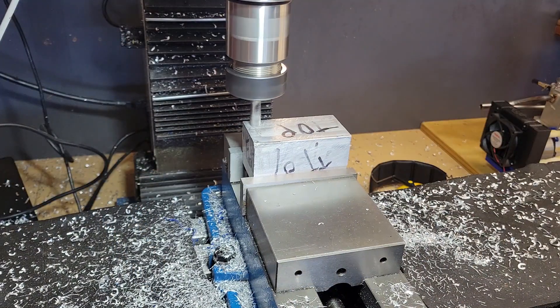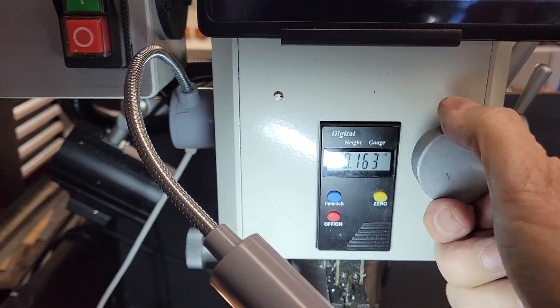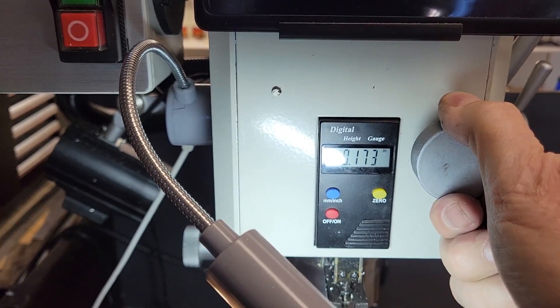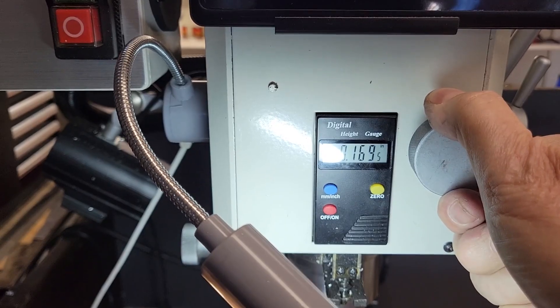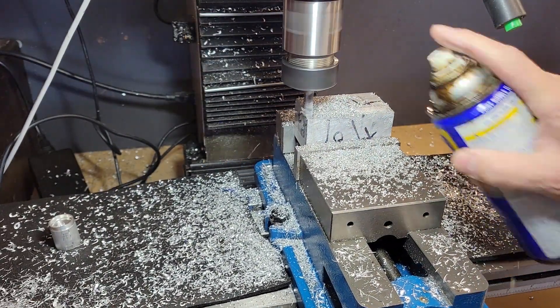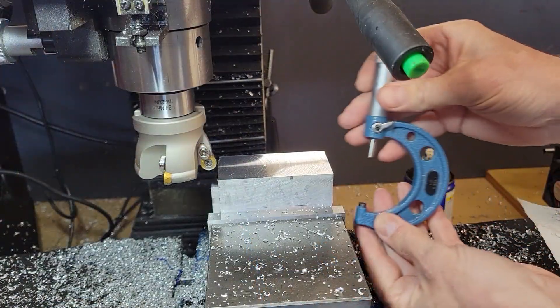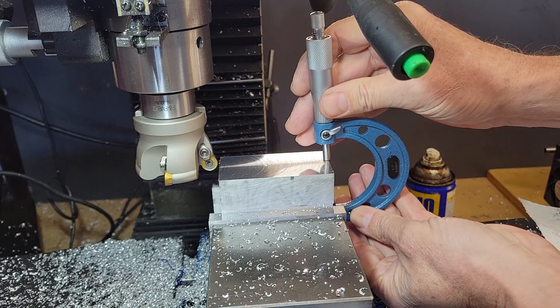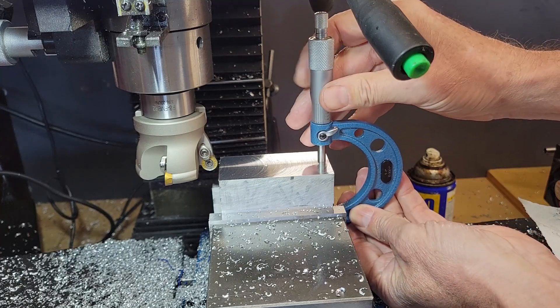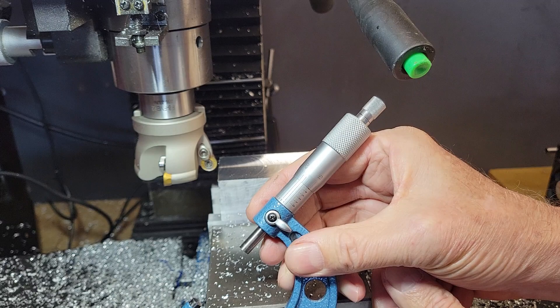I zero the flat end mill against the workpiece and then lower the quill 170 thousandths. I'm shooting for 185 but the last 15 thousandths I'll take off with the face mill. Now I measure to see how I'm doing. The last cut of the face mill I only take a few thousands off. Yep exactly where I want it.